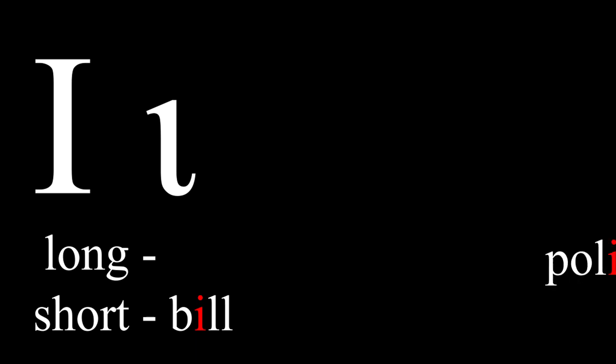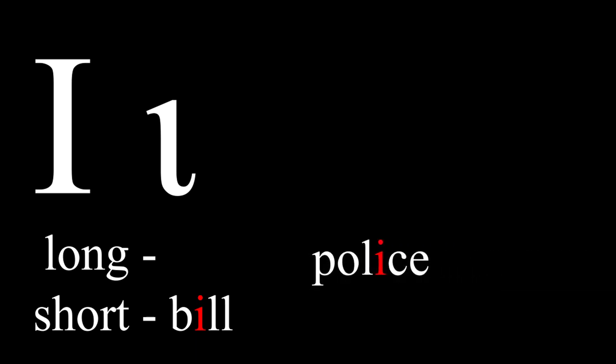Iota can be either a long or short vowel. As a short vowel, it is pronounced like the i in 'bill.' As a long vowel, it is pronounced like the i in 'police.'